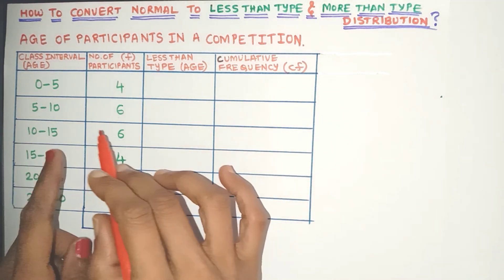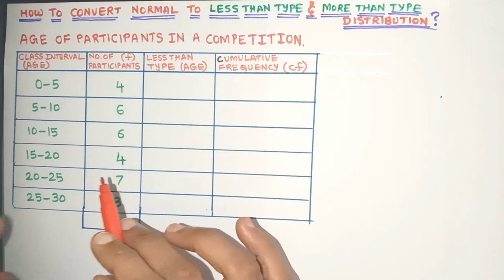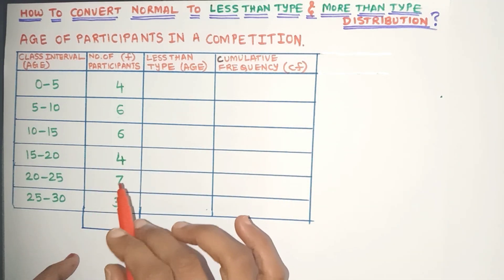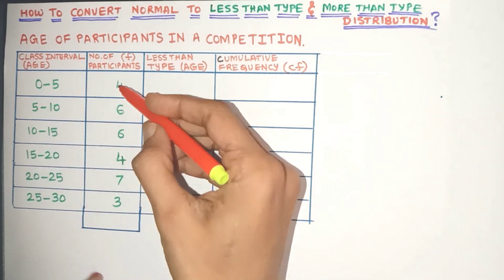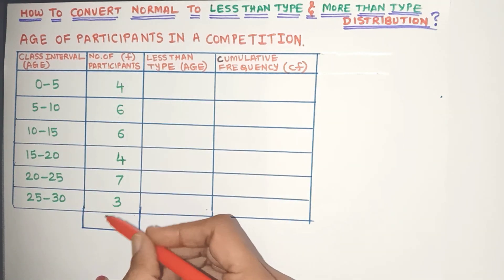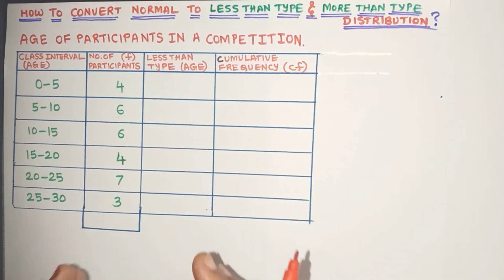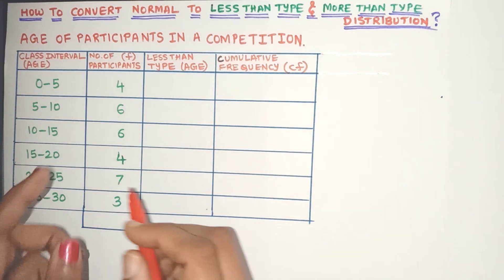So here we have age of participants in a competition. Here is the class interval column and these are the frequencies. So first, let's learn how to convert to less than type.